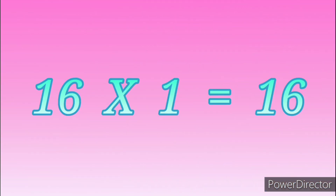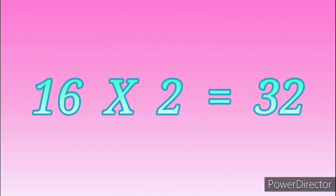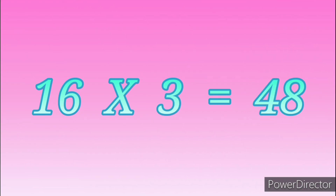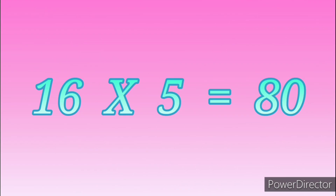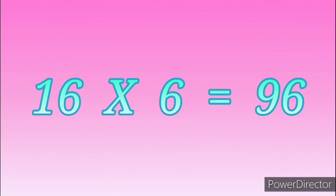Table of Sixteen. 16 ones are 16. 16 twos are 32. 16 threes are 48. 16 fours are 64. 16 fives are 80. 16 sixes are 96.